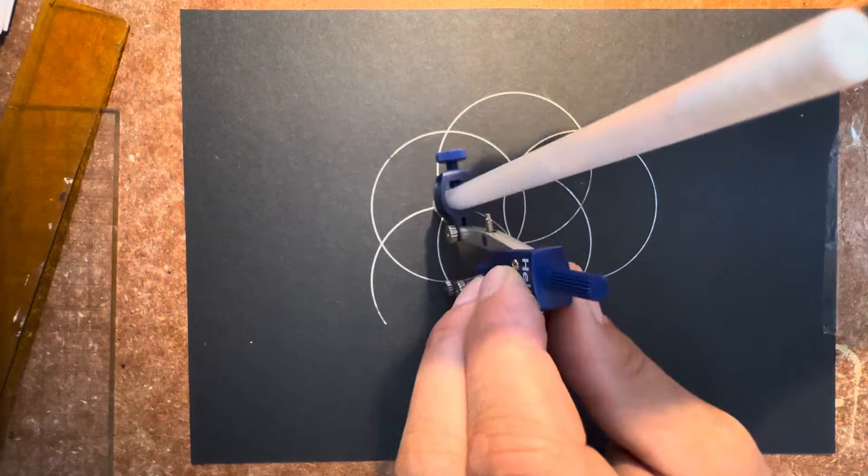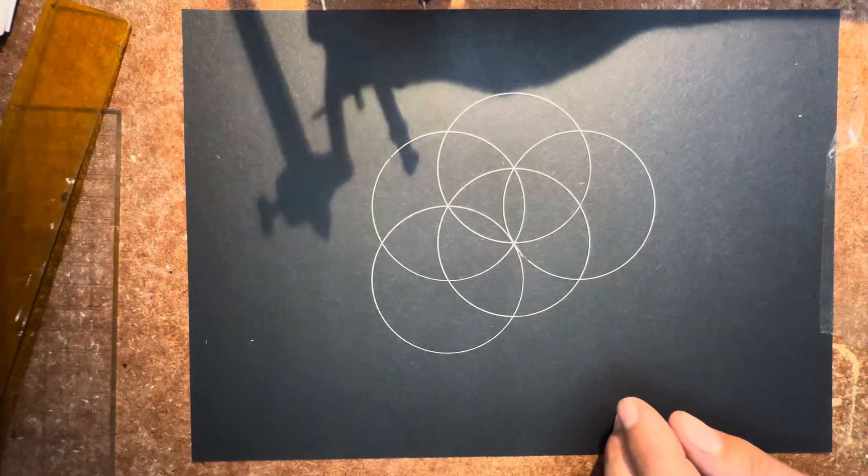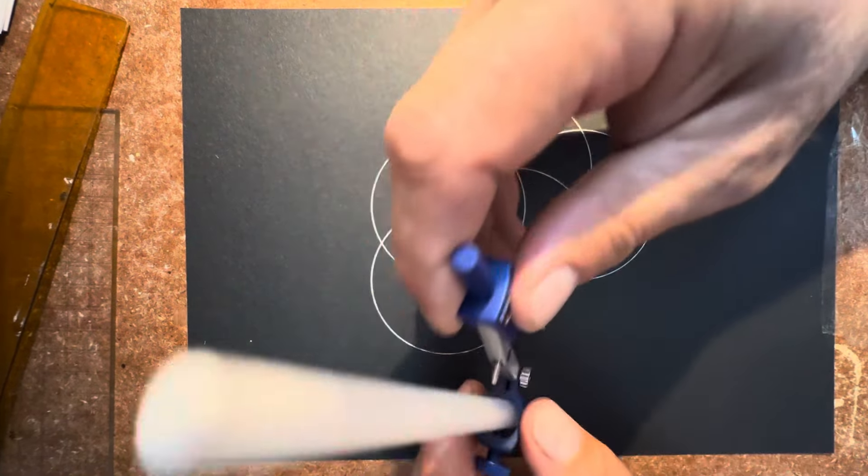And you draw a fifth circle. You'll start to see the pattern emerging now by the time you get to the sixth circle.